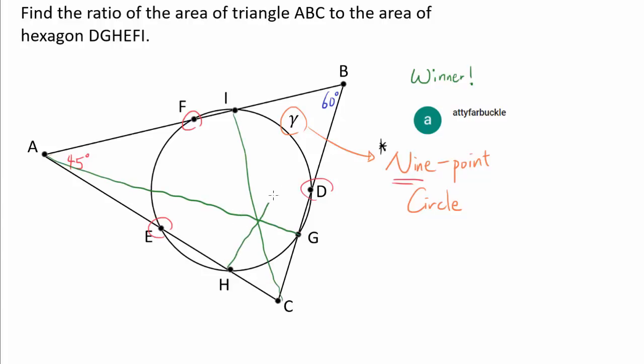So when you draw the 3 altitudes of the triangle, you are going to have this orthocenter, this point of concurrency, H.